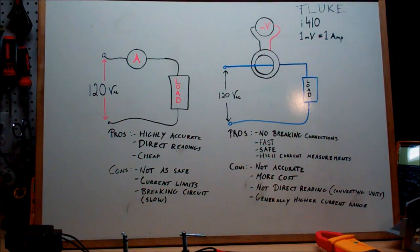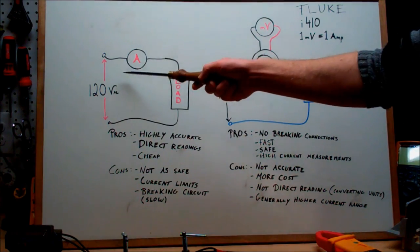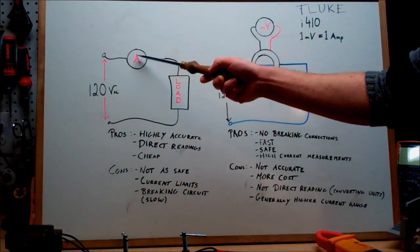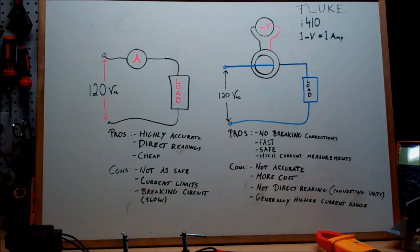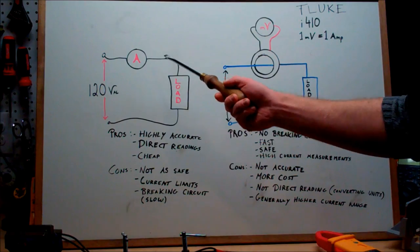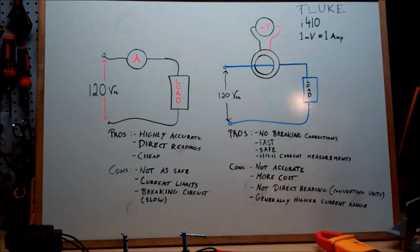Now as you can see here I've got two illustrations. First off, we have our classic multimeter measurement, where you have to break the circuit and throw your ammeter in series in order to take a measurement. And there is some pros and there is cons to this. First off, highly accurate. When you're using something like your Fluke 289 here, you get monstrous results for accuracy.